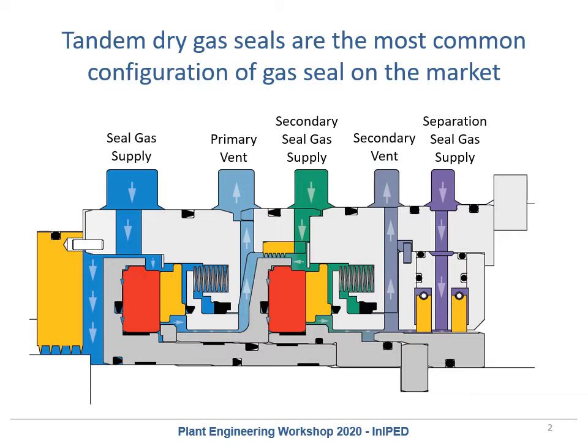The next most important component is the primary ring, which is the stationary ring. It is static and does not rotate, but it does move axially along with its carrier. Those two rings form the core of the dry gas seal, where we achieve that tiny one micron sealing gap that helps get the leakages so low. To do that we need a couple of gas streams supplied by the gas seal system.